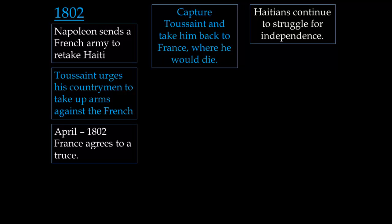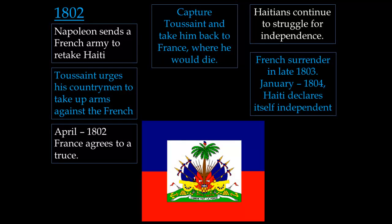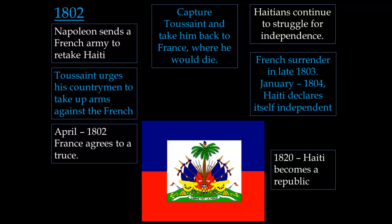The Haitians continue to struggle for independence. After about another year, in late 1803, the French army had been decimated by yellow fever. By January 1804, Haiti is able to declare itself independent. It's going to be another 15 years before it becomes an actual republic due to infighting among Haitian leaders, and it's not until 1820 that it actually becomes a self-governed republic.